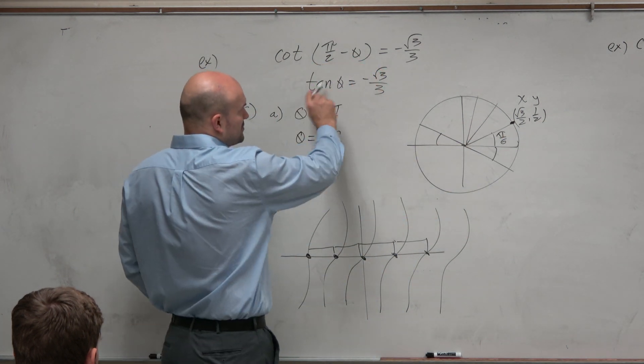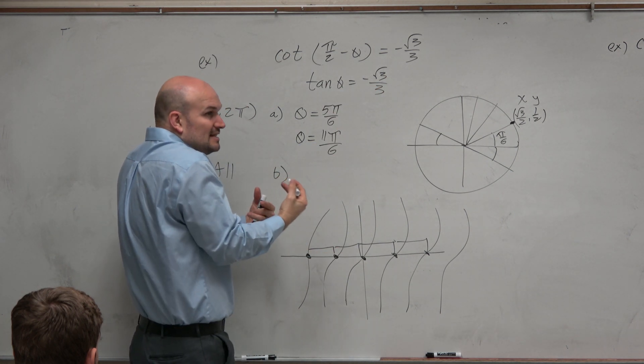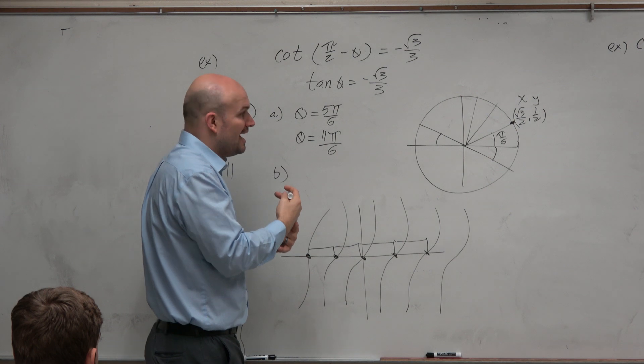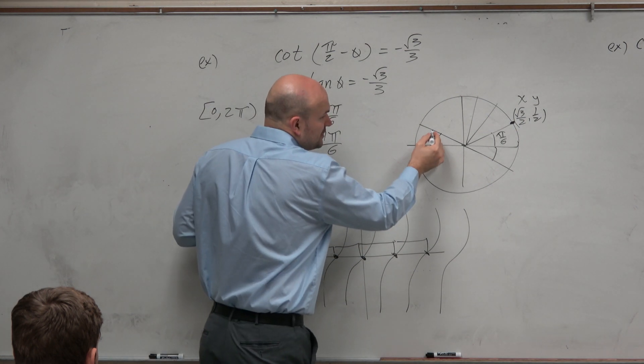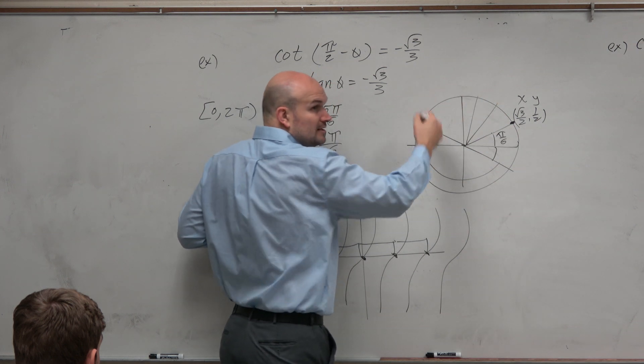We obviously have different solutions. We're looking for when the angle is negative square root of 3 over 3. It's a little bit different. But you guys can see that the solutions repeat every π. And that's obvious when you look at this graph. Every π, I come to a solution.